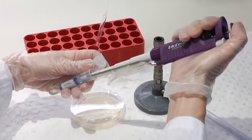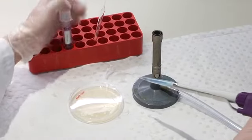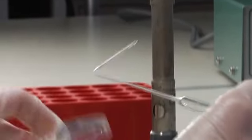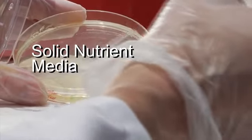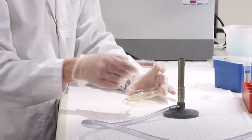Now the plasmid has had a chance to express its antibiotic resistance gene, I can spread the bacteria out onto a solid nutrient media containing antibiotics. Then I'll just take this plate to the incubator and let the bacteria grow overnight.